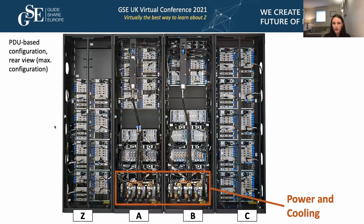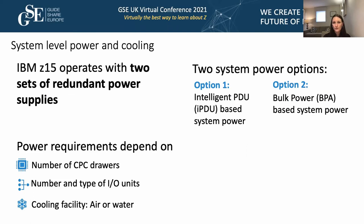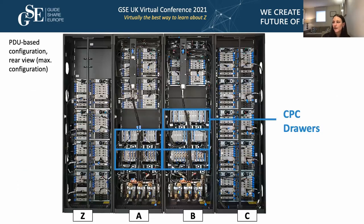For power on the z15, there are two options: the iPDU and bulk power, and which is chosen depends on the organization's requirements. Power requirements also depend on how many CPC drawers and IO drawers are configured. For cooling, there are also two options: air or water cooling, depending on the organization's preferences.